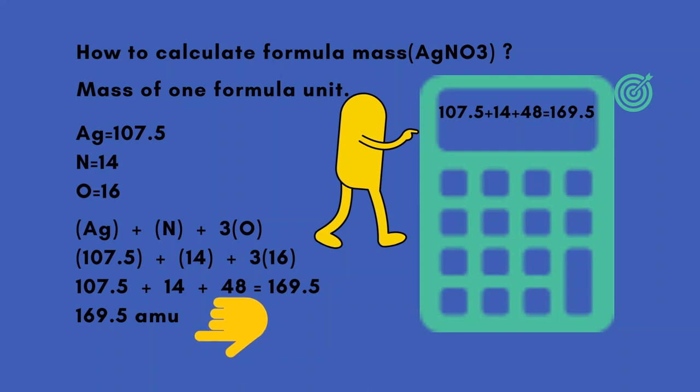Ag plus N plus 3O: 107.5 plus 14 plus 3 times 16. 107.5 plus 14 plus 48 equals 169.5. 169.5 amu.